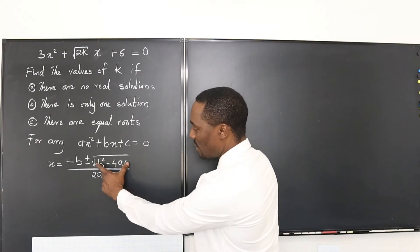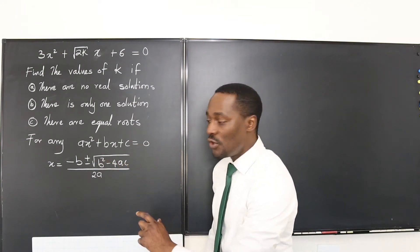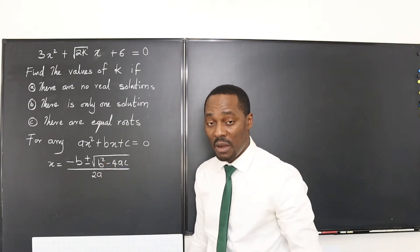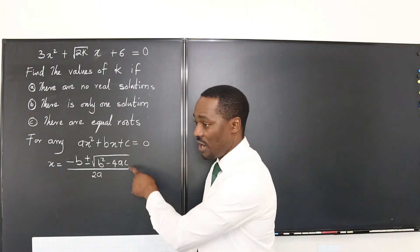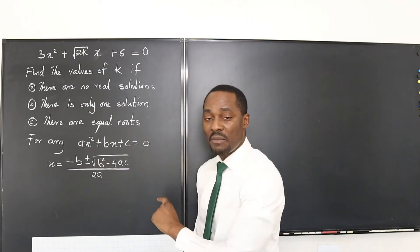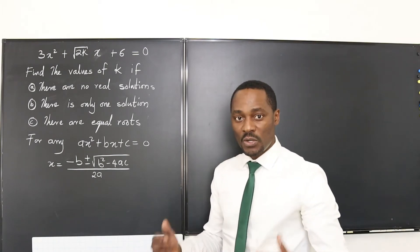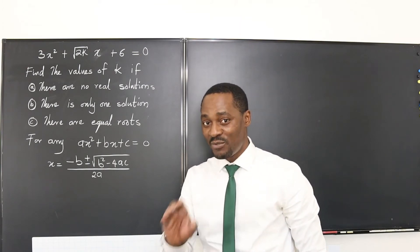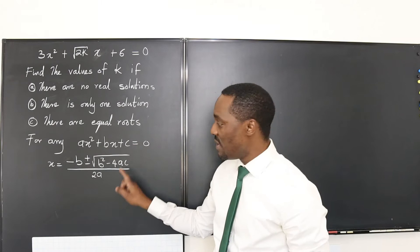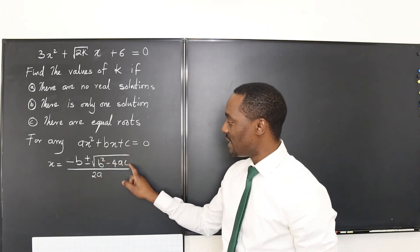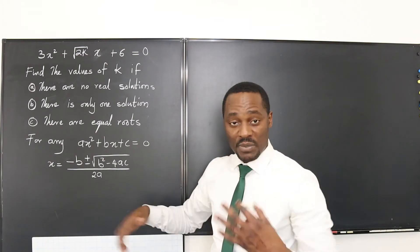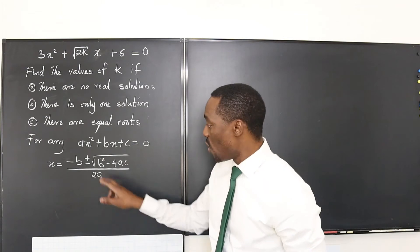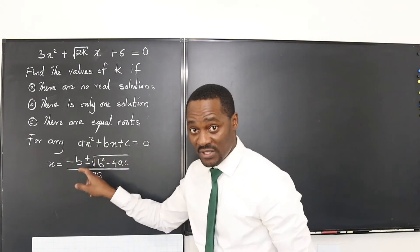So but if you end up with a negative under the square root sign, whatever you get from here will not be real. It will be complex, a complex number with imaginary parts. So you're going to have imaginary numbers popping up from here if it ends up being negative. So we can come to certain conclusions that if you're going to have real roots, you must get a positive here.